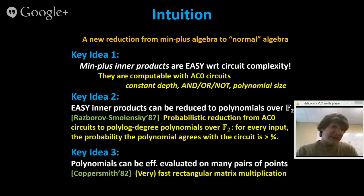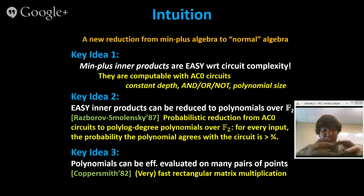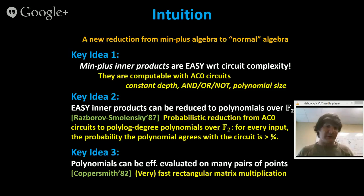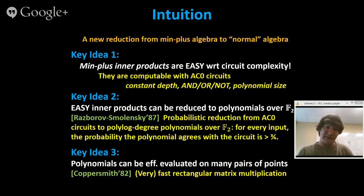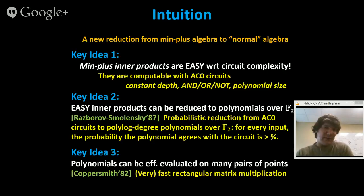The third key idea is that these polynomials can be evaluated efficiently on many pairs of points. We take the inner product operation, reduce it to a polynomial, and evaluate it on n² pairs of points using an algorithm of Coppersmith. These are the three key ideas in the talk. The reason this connects to APSP is that the weights are order-log-n-bit strings passed through the circuit, and we circumvent cubic lower bounds by manipulating comparisons at the bit level using Boolean circuits.